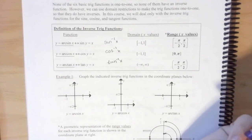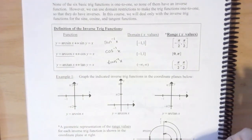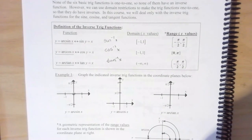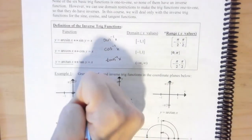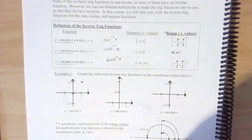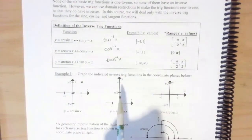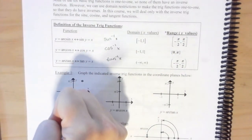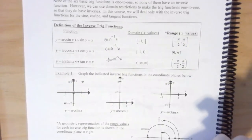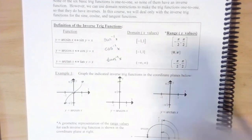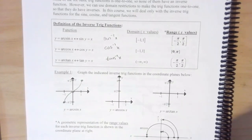We're going to graph it going backwards. At zero, sine is zero, so if I flip x and y I still get (0, 0). At π/2, sine is one, so at x=1 we have y=π/2. At negative π/2, sine is negative one, so flipping those, at x=-1 we have y=-π/2. Keep in mind this is not linear even though it looks linear — it's a curve.